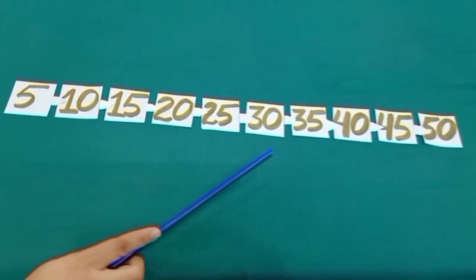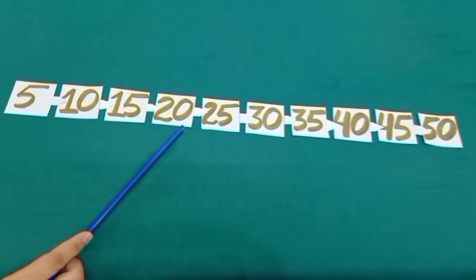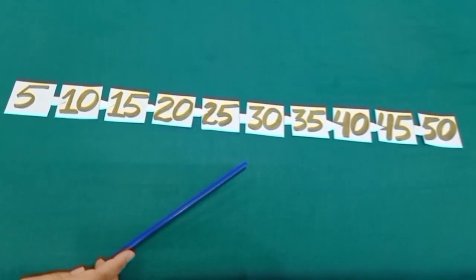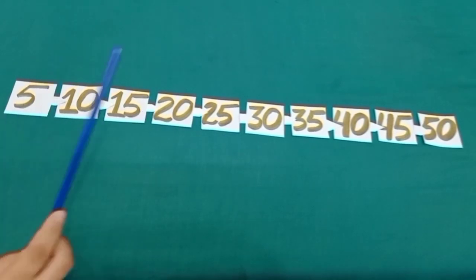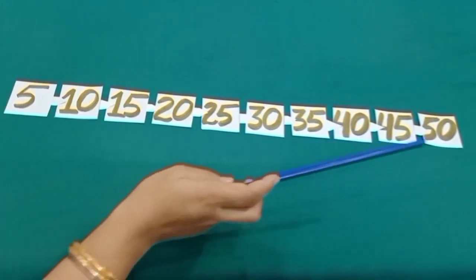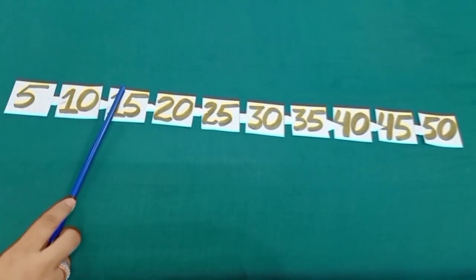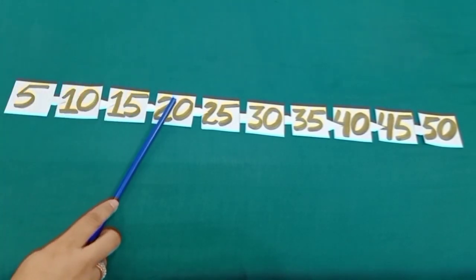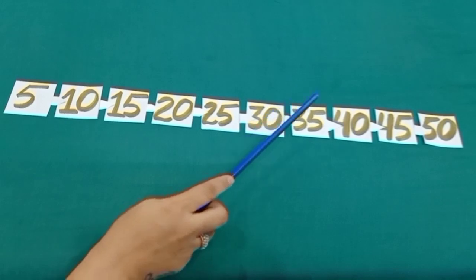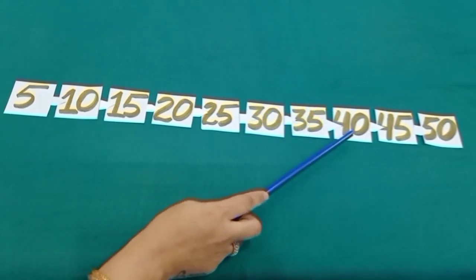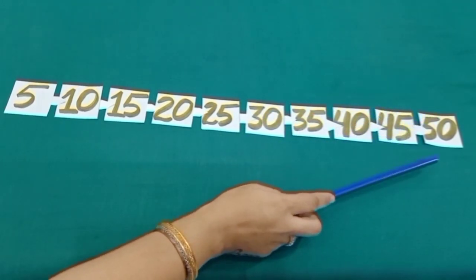Skip, count, skip, count, count by 5's. We can count up to 50. 5, 10, 15, 20, 25, 30, 35, 40, 45, 50.